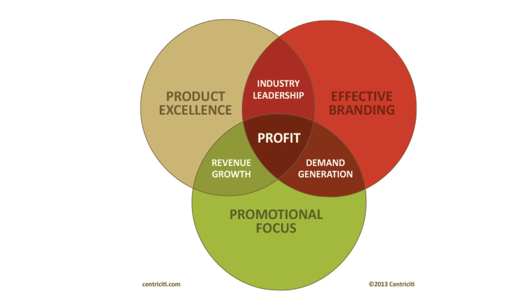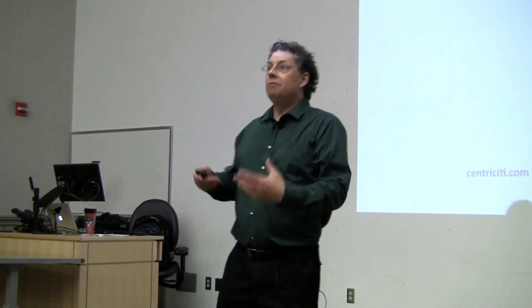Venn diagrams deserve their own category. Here's some kind of business diagram with product excellence, effective branding, and promotional focus, and at their intersection: industry leadership, revenue growth, and demand generation — and when it all comes together, profit. That sounds nice. But why does revenue generation include promotional focus and product excellence but is independent of effective branding? And why does demand generation involve effective branding and promotional focus but nothing to do with product excellence? And why is profit a different category than all the other things displayed here? This is bullshit — just data bullshit put together.